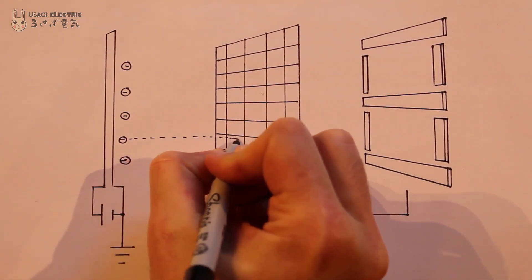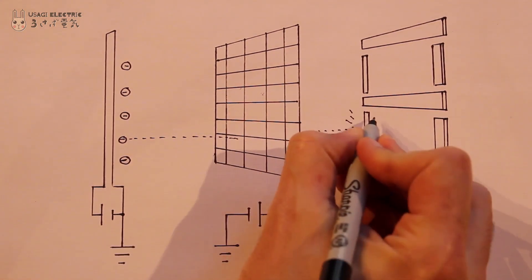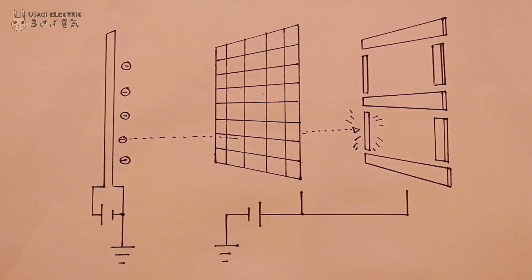With multiple anodes contained within the VFD, the electrons will only be attracted to anodes that have been given a positive charge. When the electrons strike the anode, the phosphor fluoresces, emitting visible light.